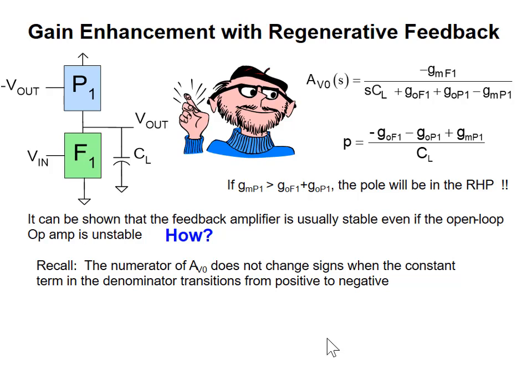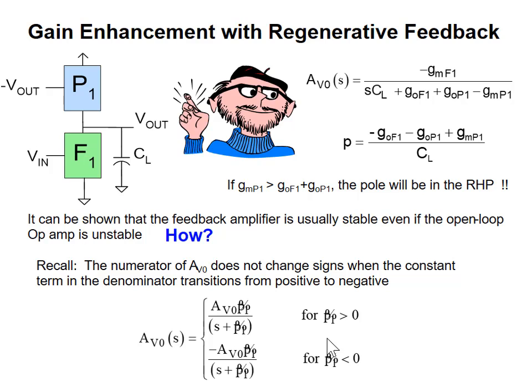We looked at our expressions on that numerator, stated as minus GmF1, if GmP1 changed signs from positive to negative — if the constant term in the denominator changed signs from positive to negative. So if you look at this amplifier structure, and even though I'm only focusing on a simple structure, the same applies to a fully differential amplifier. And we can turn these into two-stage GmF op-amps too.